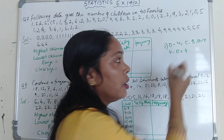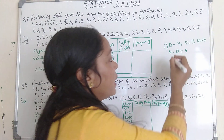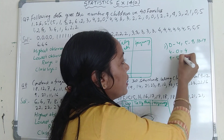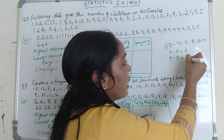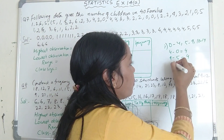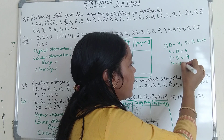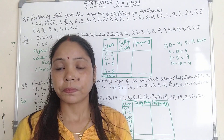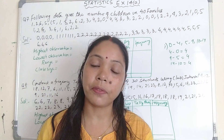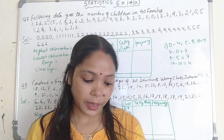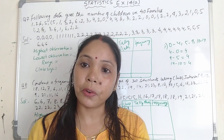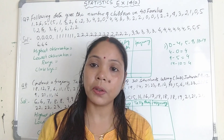So 4 minus 0 will be 4. In the second one, the upper limit is 9 and lower limit is 5, so subtracting again we get 4. Next, upper limit is 14 and lower limit is 10, so 14 minus 10 will be 4. In this way we have to find the class size of a given class interval. With the help of this, try to solve question number 4, all the parts, in your copy.